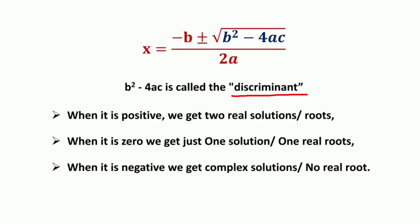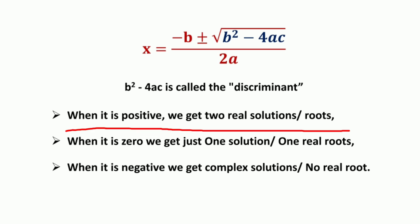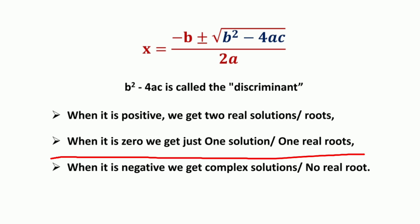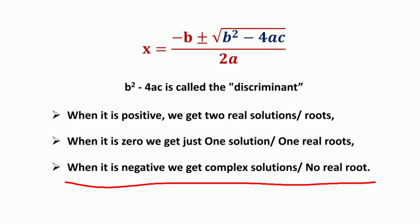The discriminant is the value under the radical sign, that is b² − 4ac. A quadratic equation with real number coefficients can have three possibilities: if the discriminant b² − 4ac is a positive number, we get two different real roots. If b² − 4ac equals zero, we have one real root. However, if b² − 4ac is negative, we get a complex solution — that is, no real roots exist.